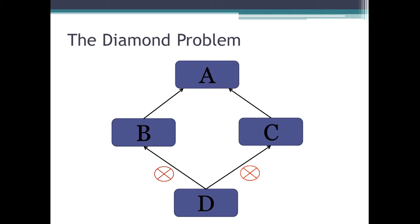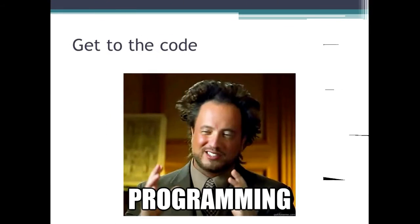Now as you already know, Java doesn't allow multiple inheritance — it only allows you to extend one class. For example, if you are in one class and you use the extends keyword, you can only inherit from one class. And the reason you can only inherit from one class is because of this diamond problem. Hopefully this made a little bit of sense. What I wanted to do now is actually show you how to recreate the diamond problem in Java, so let's get right to the code.